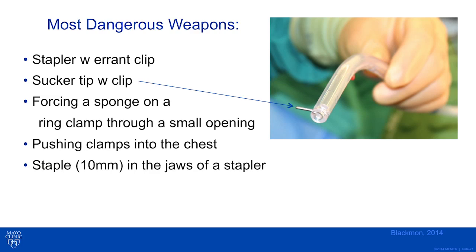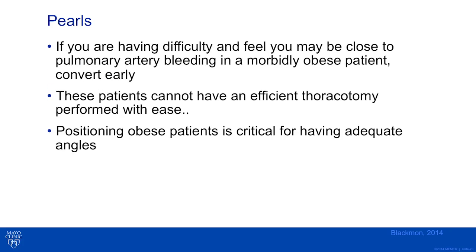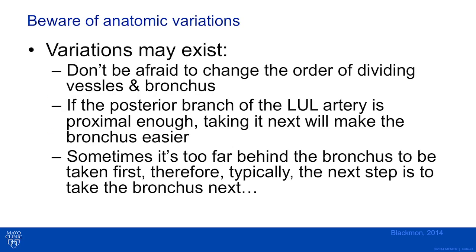Additional pearls: place another trocar if the angle is not good, don't be afraid to open, use leaders to navigate, and remember that pressure controls 90% of bleeding. If you are having difficulty near the pulmonary artery in a morbidly obese patient, convert early as entering the patient in a timely manner may be difficult — these patients cannot have an efficient thoracotomy and finding a deep retractor is difficult. Positioning obese patients is critical for adequate angles. Be aware of anatomic variations, and don't be afraid to change the order of dividing vessels and bronchus.